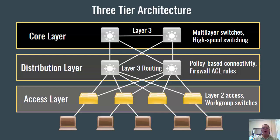One of the things you're required to know in the CCNA is the three-layer hierarchical model, or the three-tier architecture. The layers are the access layer, the distribution layer, and the core layer.